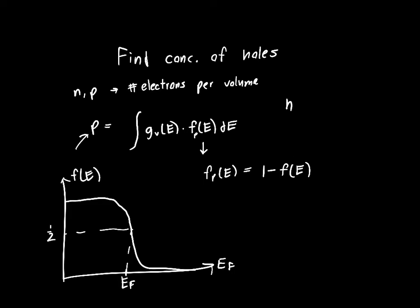We're not interested in the probability of finding an electron—we're interested in the probability of not finding an electron, the probability of finding a hole, which is just one minus the probability of finding an electron. That's just from basic probability: the probability of something not happening is one minus the probability of it happening.